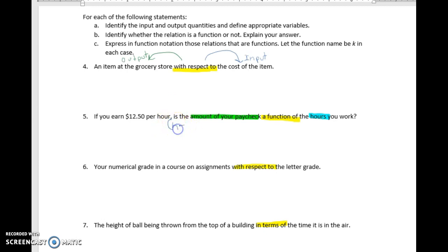Maybe H equals the number of hours, and the output is going to be the amount of paycheck, so maybe we want to call it P equals amount of pay in dollars, making sure we identify our unit of measurement as well. When we write it as this ordered pair, we always know the first thing is our input and the second thing is our output.